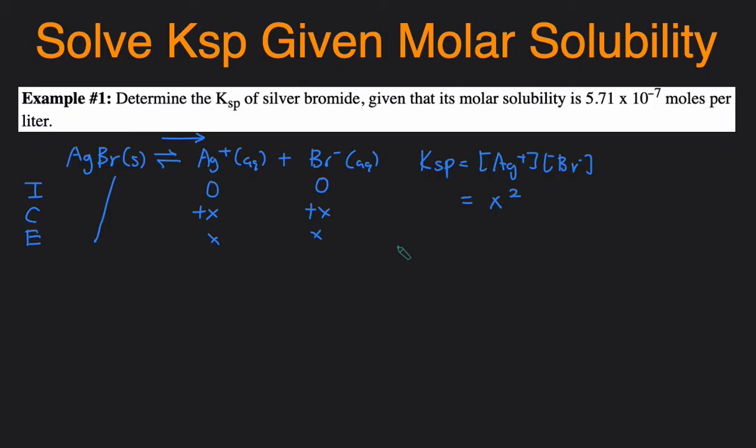X is equal to the molar solubility. Although we ignored the solid here, if we had not ignored it, this would have been -X. So X is the moles that would dissolve per liter. And we're given the molar solubility, so we're given X. Meaning we can just plug 5.71 times 10 to the negative 7 into here, and we'll get the Ksp. So let's enter that in the calculator, and that'll give us 3.26 times 10 to the negative 13 as the Ksp.